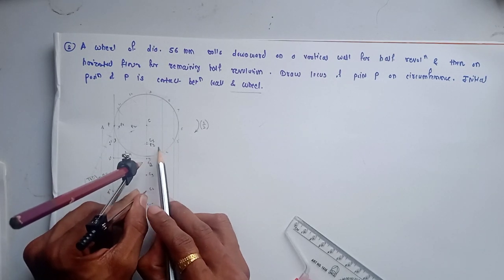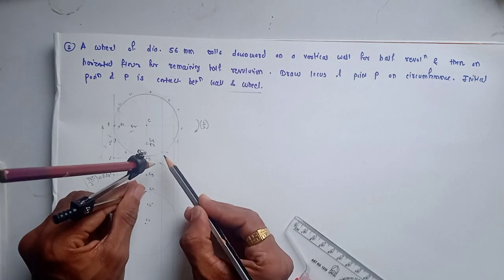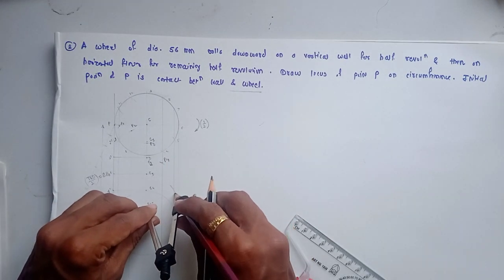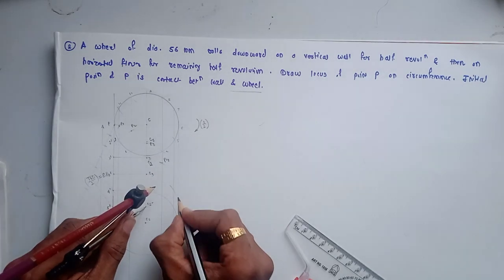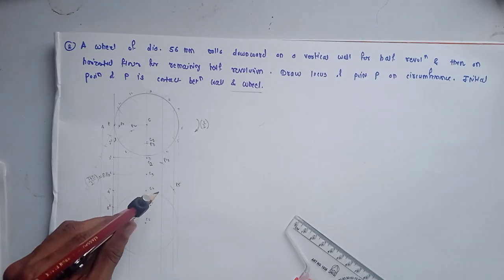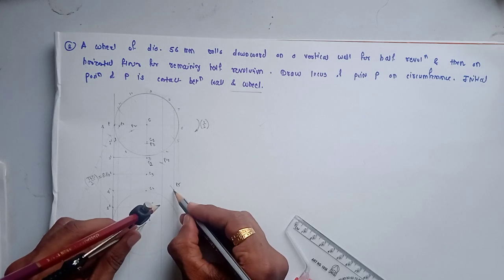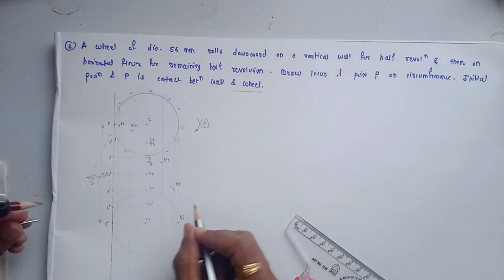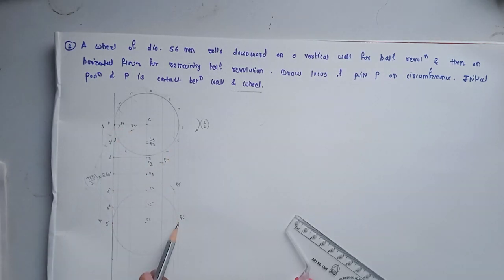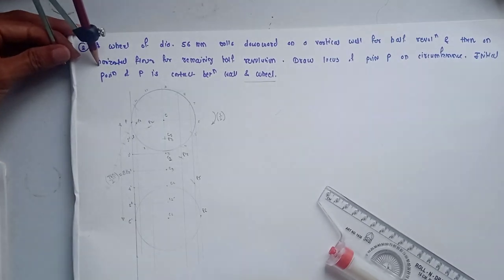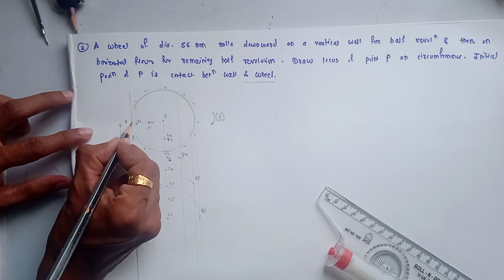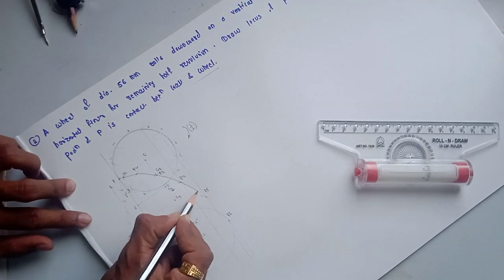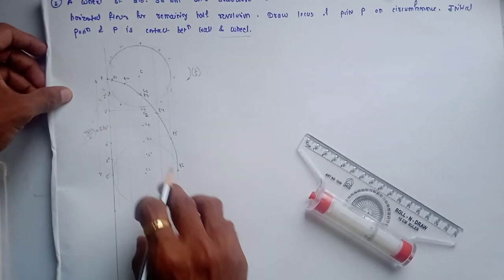Draw the arc on the line through point four — this is P4. With C5 as center, P5 will be exactly on the line through point six, giving a tangent. After half revolution, point P has shifted exactly 180 degrees, giving P6. Draw a smooth curve through P, P1, P2, P3, P4, P5, and P6 — this is the cycloid for the first half revolution on the vertical wall.